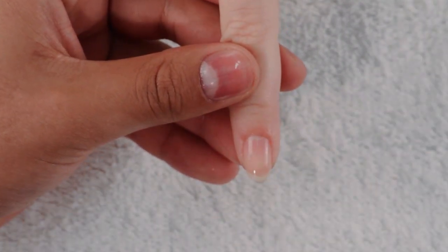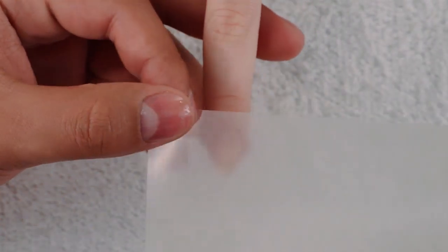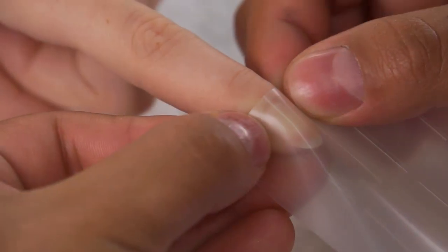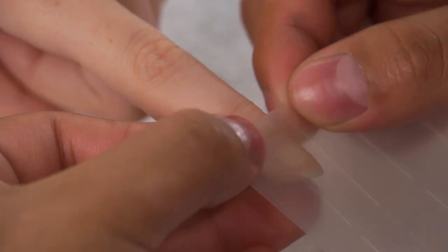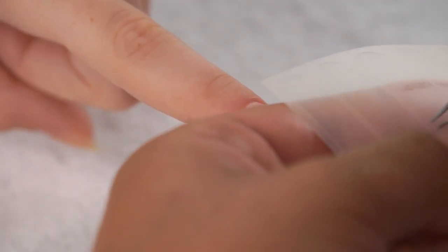Once we remove the oils we're going to come and size the nail and make sure that the Minx coat fits perfectly around the cuticle area.